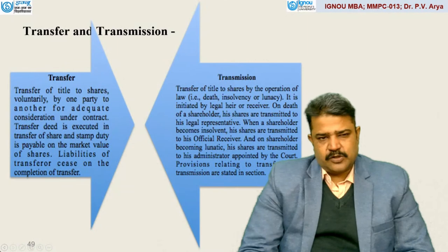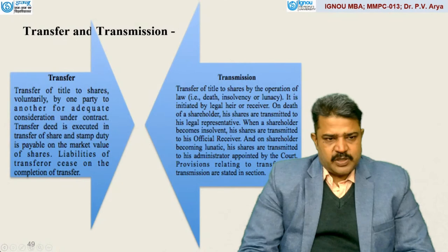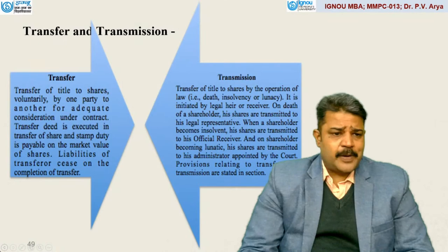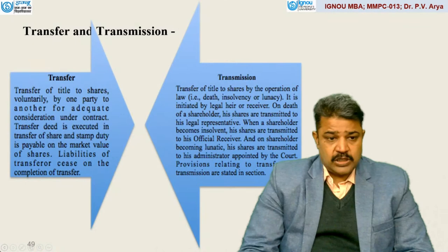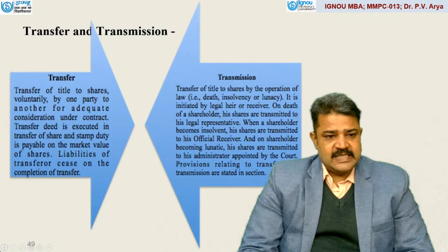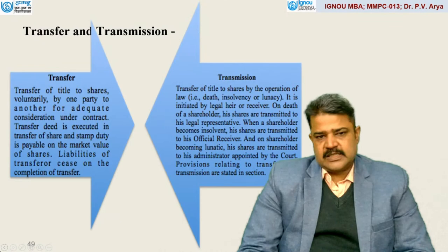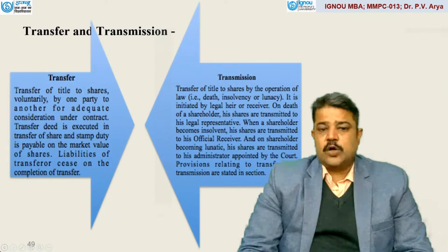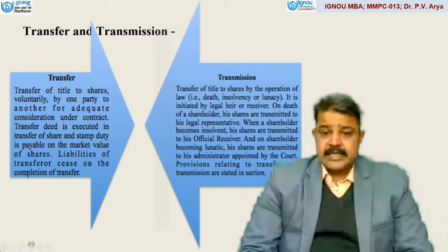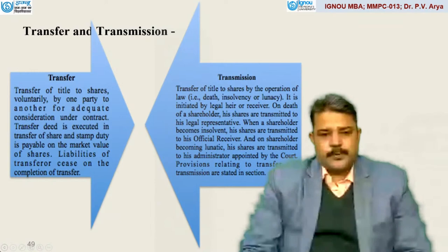As far as the concept of transfer and transmission of shares is concerned: transfer of shares is voluntary by one party to another for adequate consideration under contract. A transfer deed is executed in transfer of shares and stamp duty is payable on the market value of shares. Liabilities of the transferor cease on completion of transfer. Transmission of title of shares is by operation of law — that is death, insolvency, or lunacy. It is initiated by the legal heir or receiver. On death of a shareholder, his shares are transmitted to his legal representative. When a shareholder becomes insolvent, his shares are transmitted to his official receiver. On a shareholder becoming lunatic, his shares are transmitted to his administrator appointed by the court.